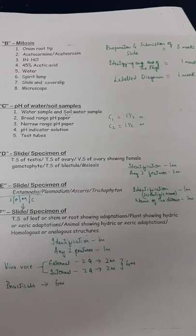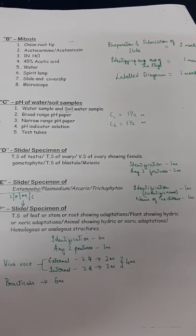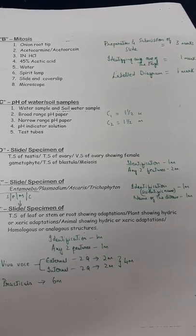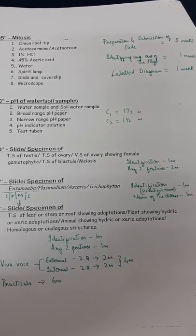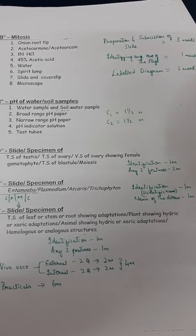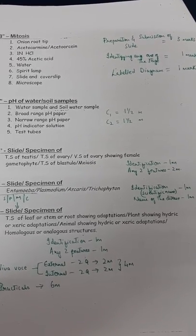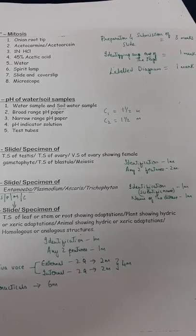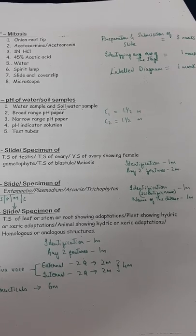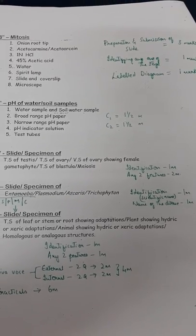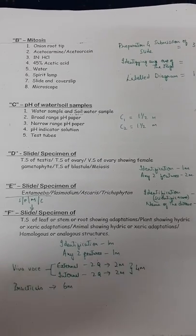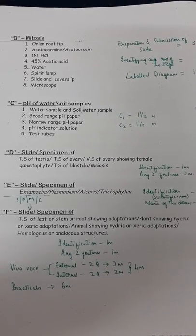Question B is preparation of mitosis, worth five marks. Preparation and submission of slide is three marks, identifying any one stage—prophase, metaphase, anaphase, or telophase—gets one mark. The easier stages to identify are metaphase, prophase, and anaphase. Drawing the identified stage as a labeled diagram gets one mark.